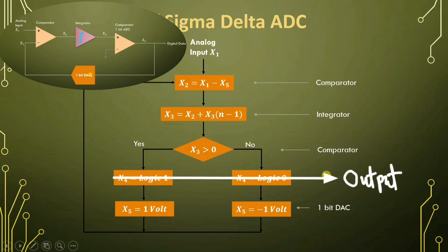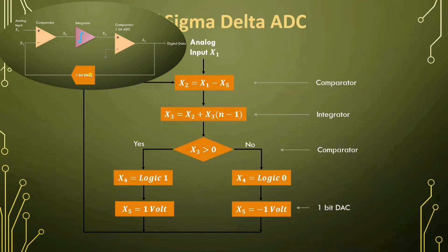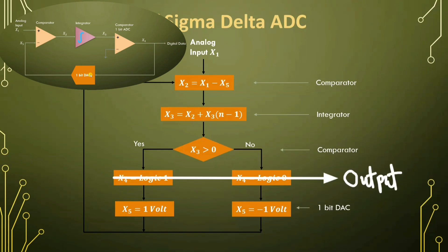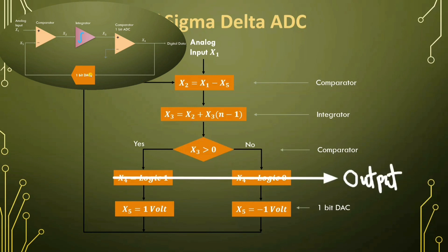With respect to the clock, we will be generating digital data. This is a very high resolution ADC where you don't need many clocks — automatically digital data will come at the output side with respect to the clock. This is all about Sigma Delta ADC. I hope that you have understood this video.